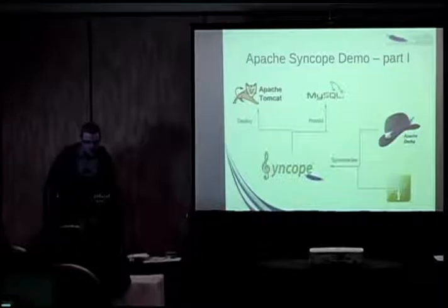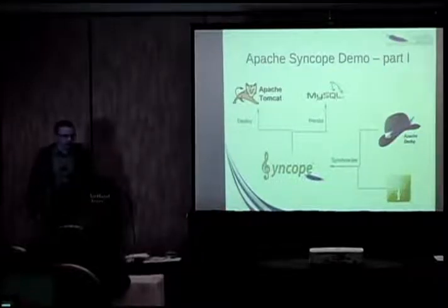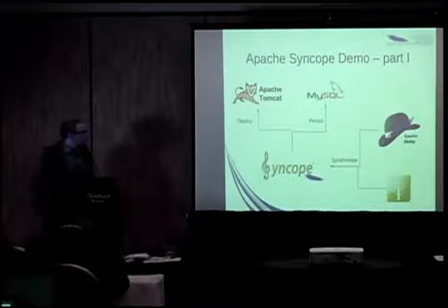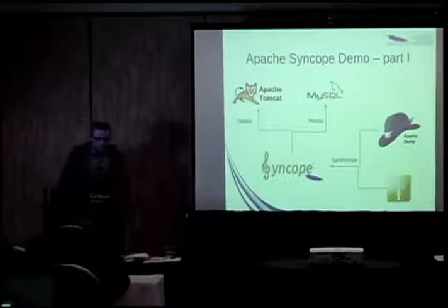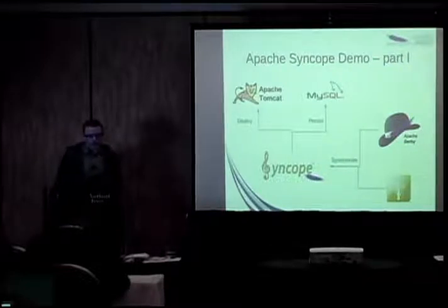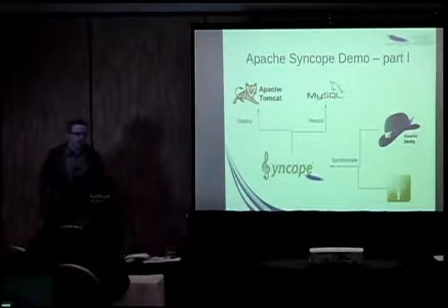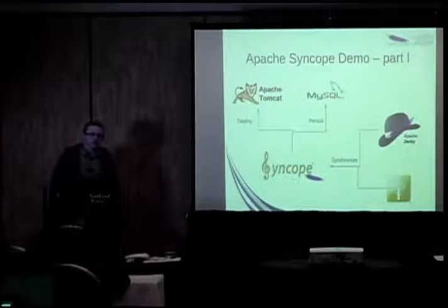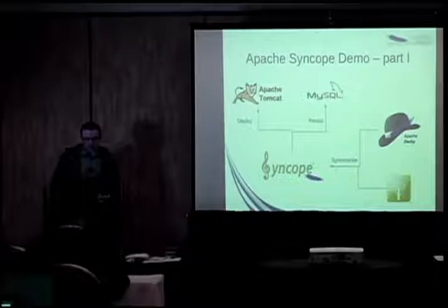The console is a web interface for managing the core, built using Apache Wicket, and it communicates with the core via REST. For the demo I'm going to show how you might use Syncope in a real-world deployment: deploying Syncope in Apache Tomcat, persisting internal storage to MySQL, with two backend identity silos — a database based on Apache Derby and an Apache DS directory instance.